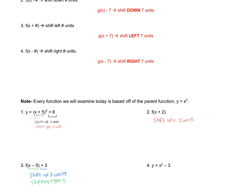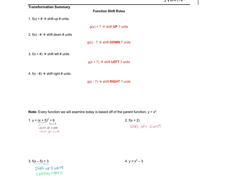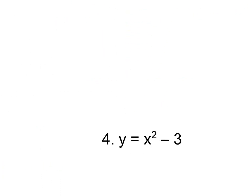And last but not least, I have y = x² - 3. The 3 is not attached to my x, it's on the outside. So that means it's going to be a shift down three units.